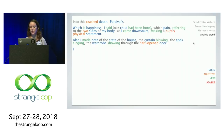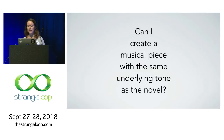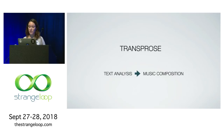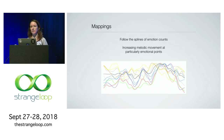So I wanted to make a project where I could do the same thing, but with emotions. I had two questions: can I translate emotions between mediums? Can I make a piece of music that has the emotions of a novel? And can I create a musical piece with the same underlying tone as the novel, all programmatically? For a few years I worked on a project called TransProse, which is basically a mapping between text analysis and music composition. I'm using a word-emotion association lexicon to get splines of emotion counts throughout the novel, and I increase the melodic movement at particularly emotional points.